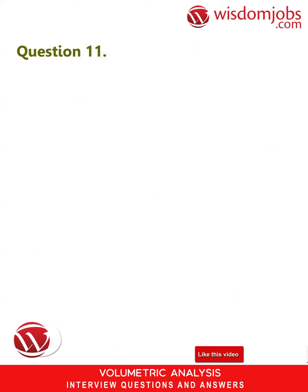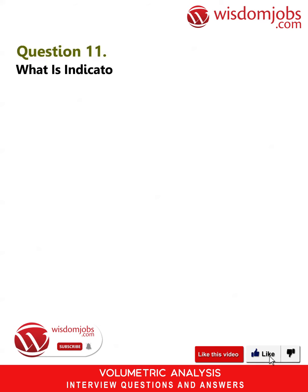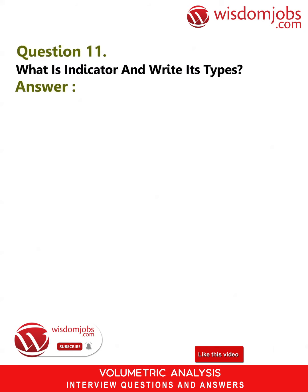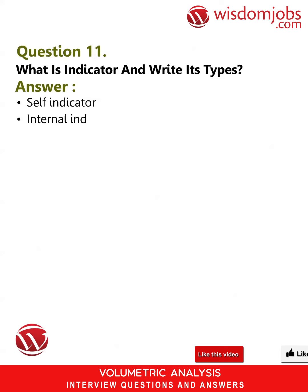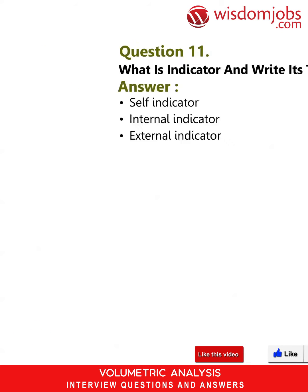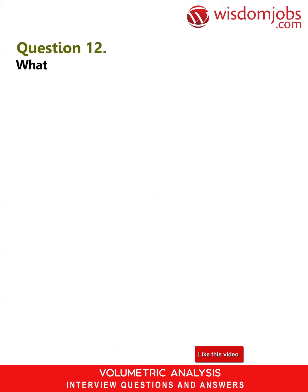Question 11: What is an indicator and write its types? Answer: Self indicator, internal indicator, external indicator.